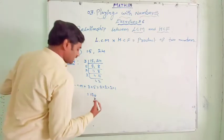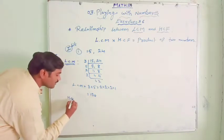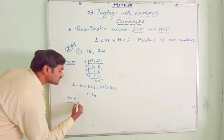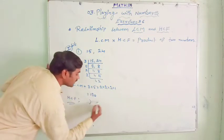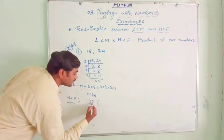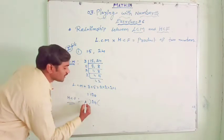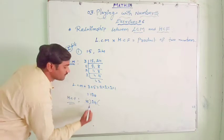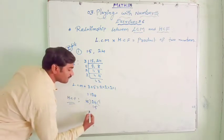Let us find the HCF. HCF of 15 and 24 using the long division method. 15 ones are 15.